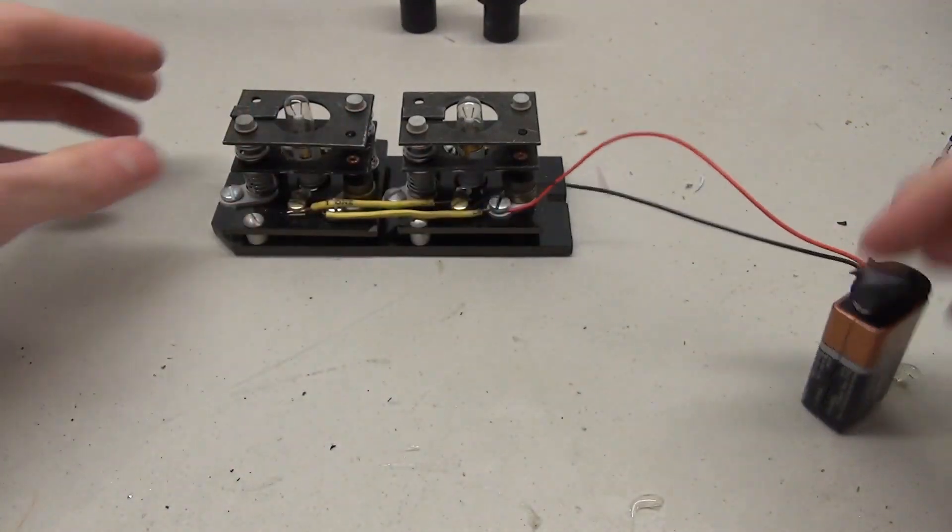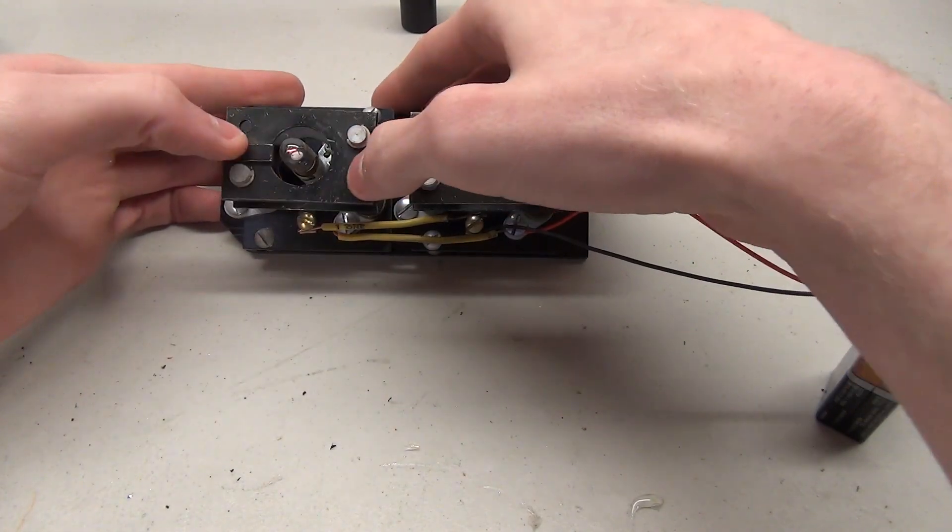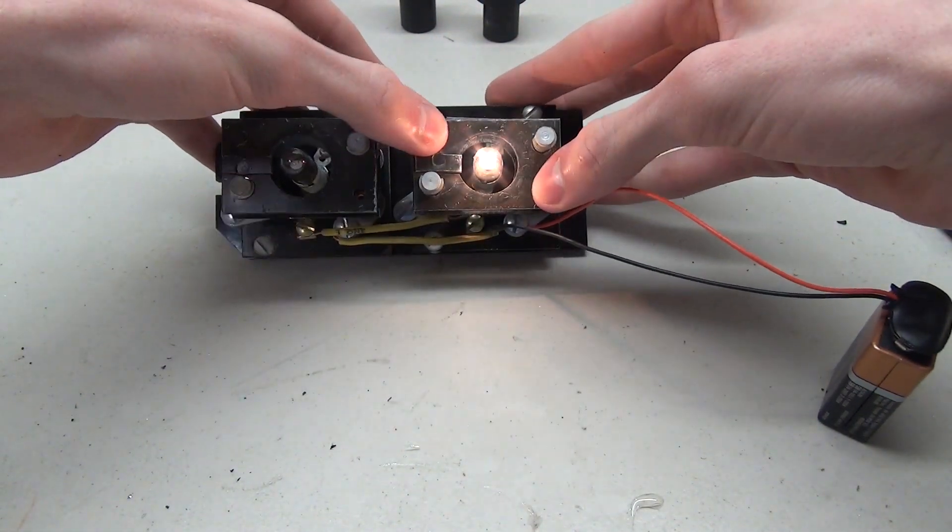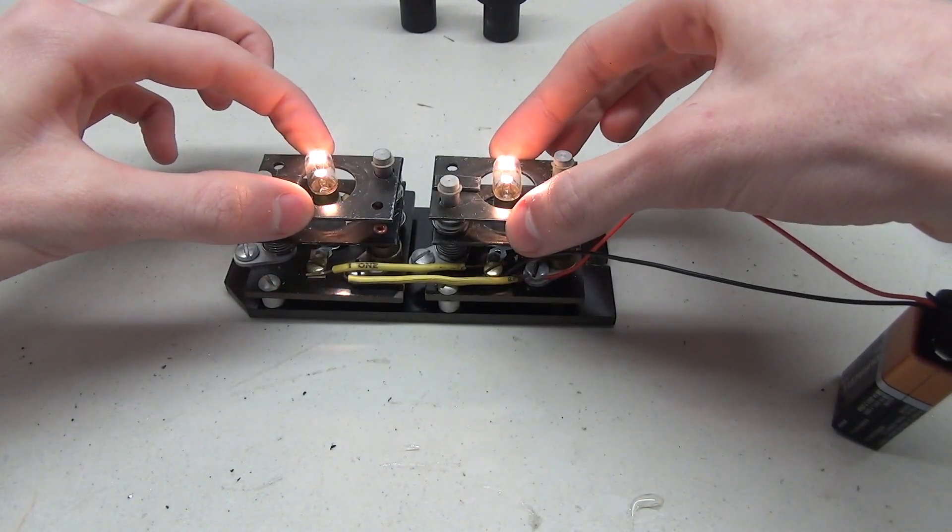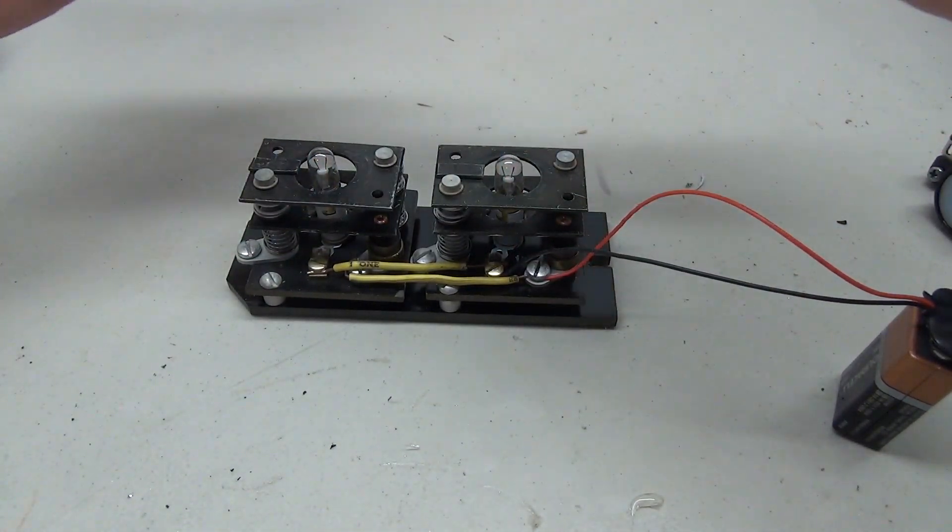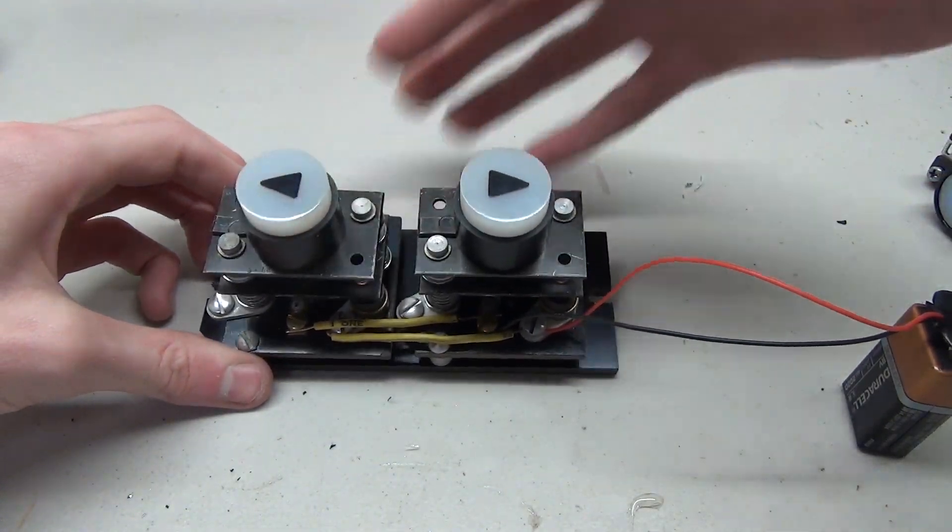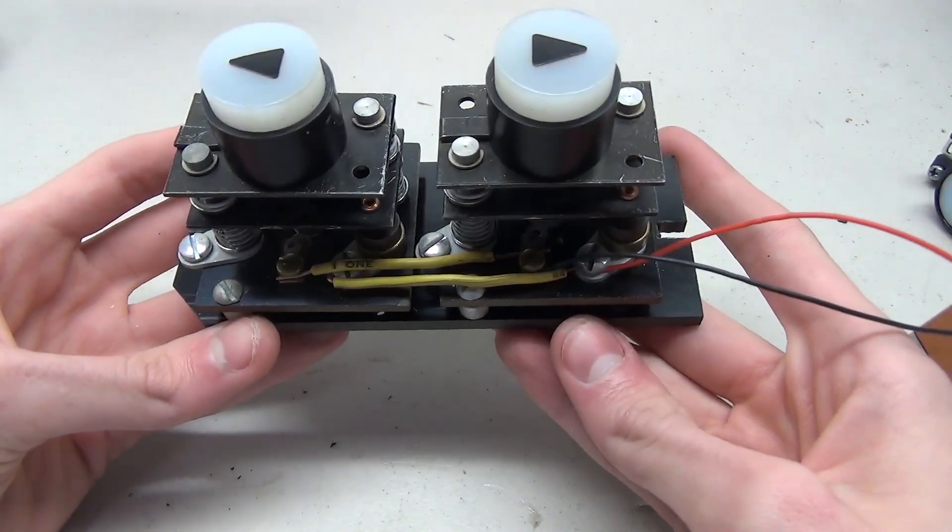Okay, so the wiring of this button is finished. Let's go ahead and test it out to make sure it works before we put it all back together. Add our nine volt battery and press down the buttons. You can see this button works and this button works, so they both work when you press down on them. Now let's go ahead and add the caps. Look at that, it works.